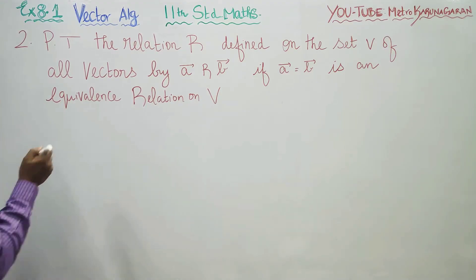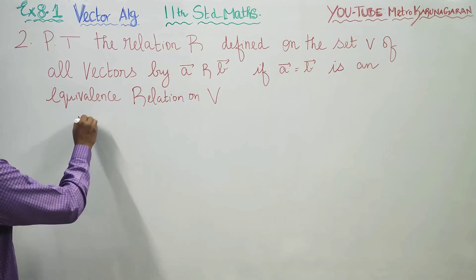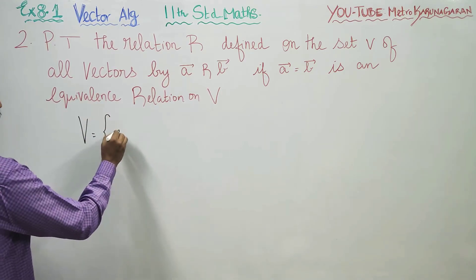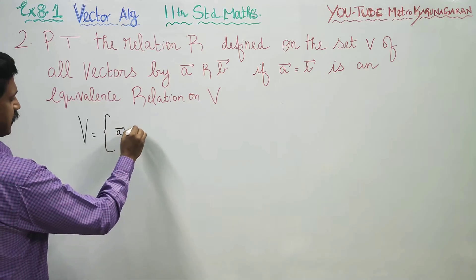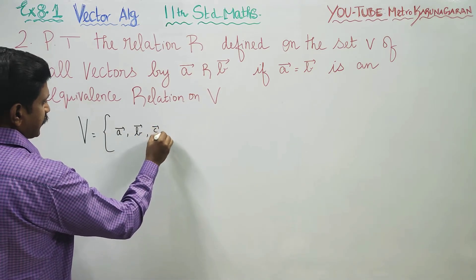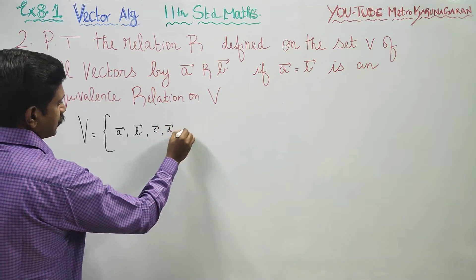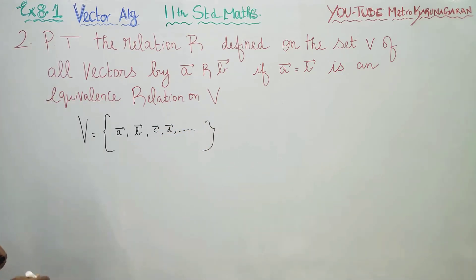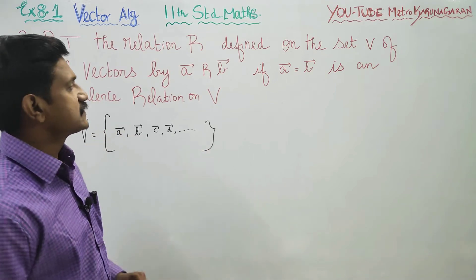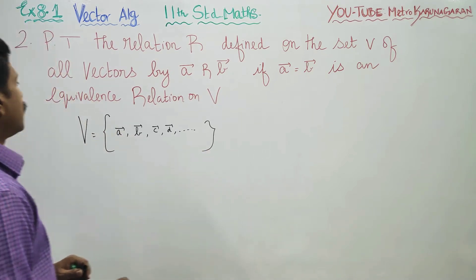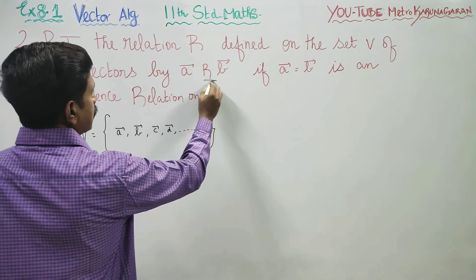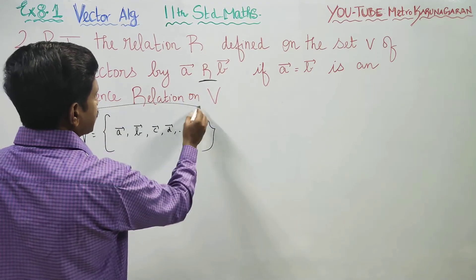I have a very large set called V, containing vectors A, B, C, D, and so on. It is an infinite set with countless vectors inside. I want to prove that R is an equivalence relation.